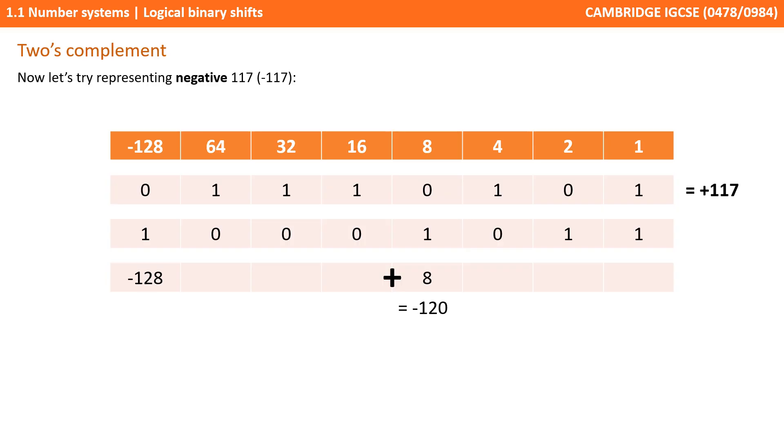We now need to place 1's in the columns to bring the value up to minus 117. So if we put a 1 in the 8 column, we're saying minus 128 plus positive 8, so that's bringing us up to minus 120. We then put a 1 in the 2 column, and now this brings our value up from minus 120 to minus 118. And finally, we put a 1 in the 1 column, and that brings us up from minus 118 to the target value of minus 117.